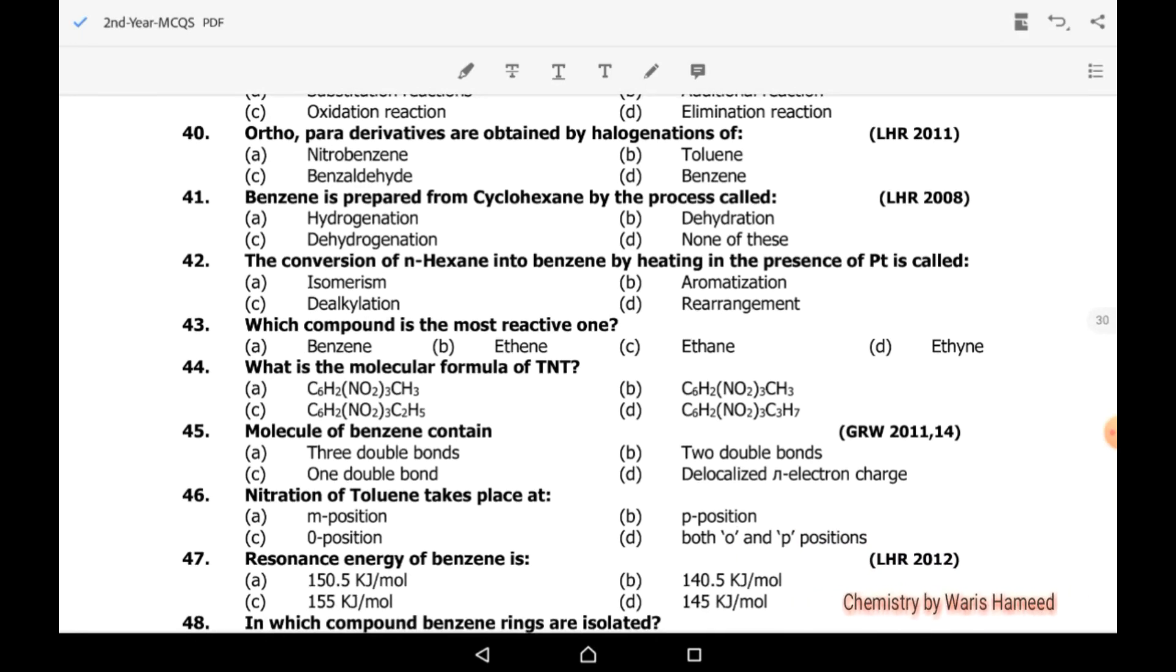Ortho-para derivatives are obtained by halogenation of toluene. When toluene is treated with other groups, it gives ortho-para directing derivatives of benzene. B option is correct. CH3 is actually an ortho-para directing group. Benzene is prepared from cyclohexane by the process of dehydrogenation. The conversion of n-hexane into benzene by heating in the presence of platinum catalyst is called aromatization, as we know that benzene ring is being prepared in this process.